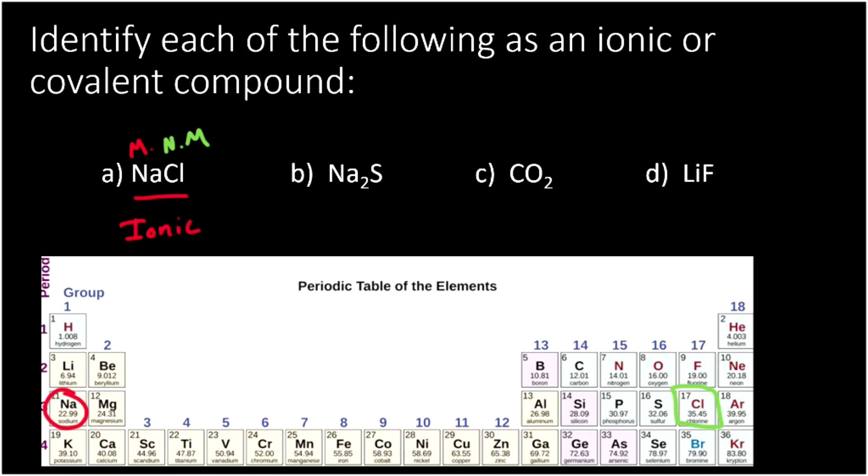The next compound, sodium sulfide, has sodium, which again we already saw was a metal. And it has sulfur, which if we look on the periodic table, we'll find it as element number 16, way over there in the non-metal category. And so when we combine together a metal and a non-metal, once again we get an ionic compound.